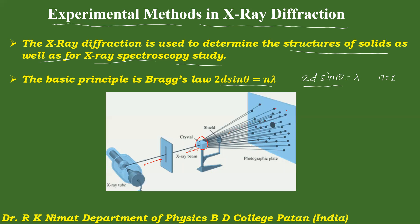You can vary θ or vary λ to design a particular method of X-ray diffraction. One important constraint is that since sinθ is always less than unity, we can conclude from Bragg's equation that the wavelength of X-rays used must be less than twice the interplanar spacing. We must select X-rays whose wavelength is less than twice the interplanar spacing corresponding to that set of parallel planes.